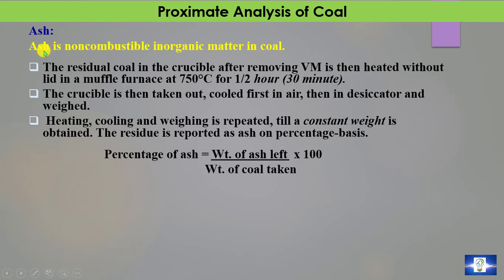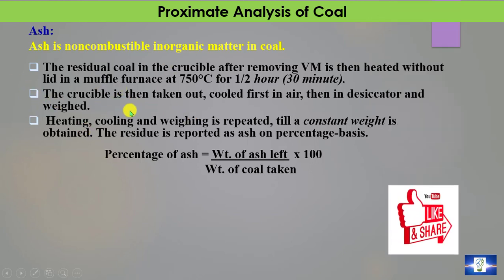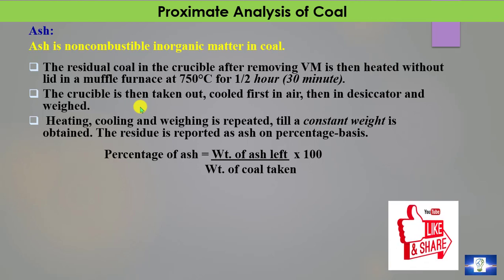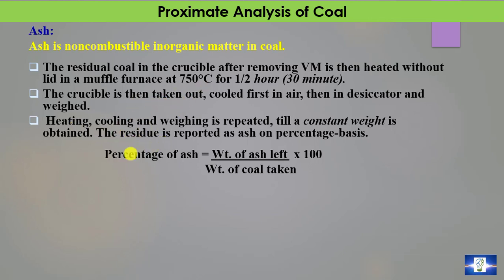Coming to ash: ash is the non-combustible inorganic matter in coal. To calculate ash, the residual coal in the crucible after removing volatile matter is heated without a lid in a muffled furnace at 750°C for half an hour. The crucible is then taken out, cooled first in air and then in a desiccator, and weighed. To ensure all volatile matter has been removed, heating, cooling, and weighing are repeated until a constant weight is obtained. The residue is reported as ash on a percentage basis.